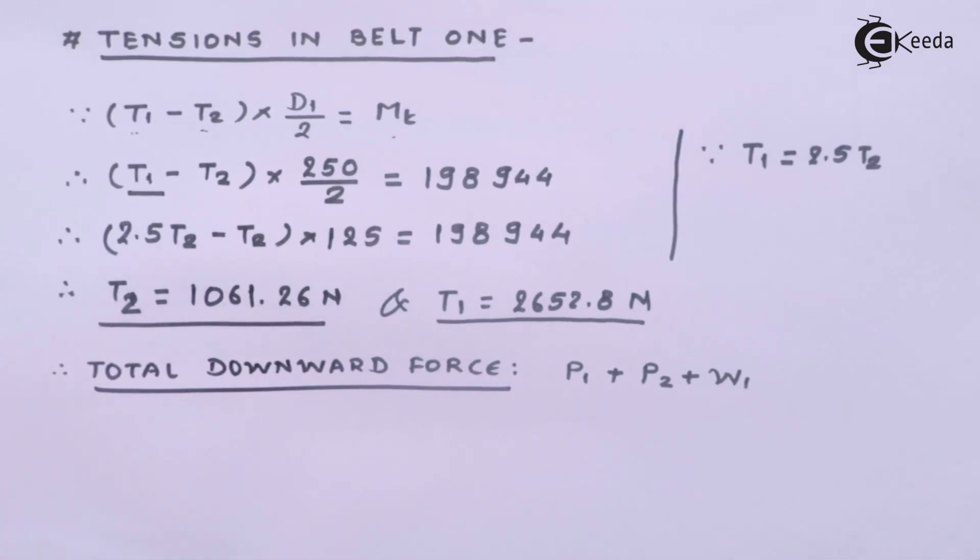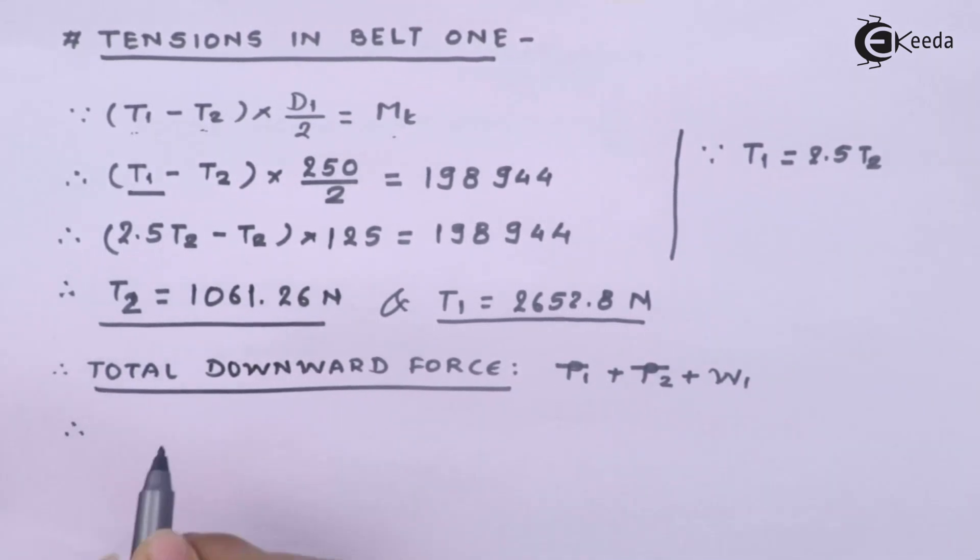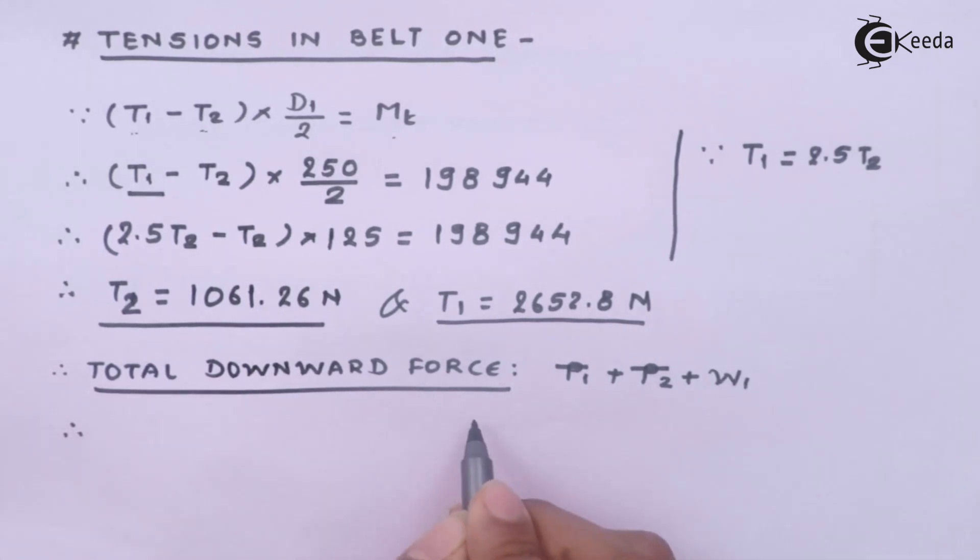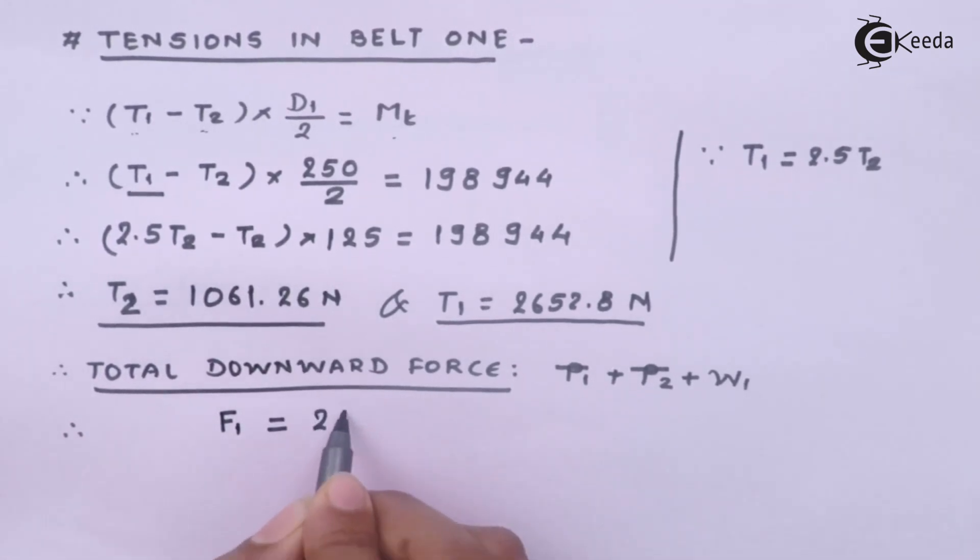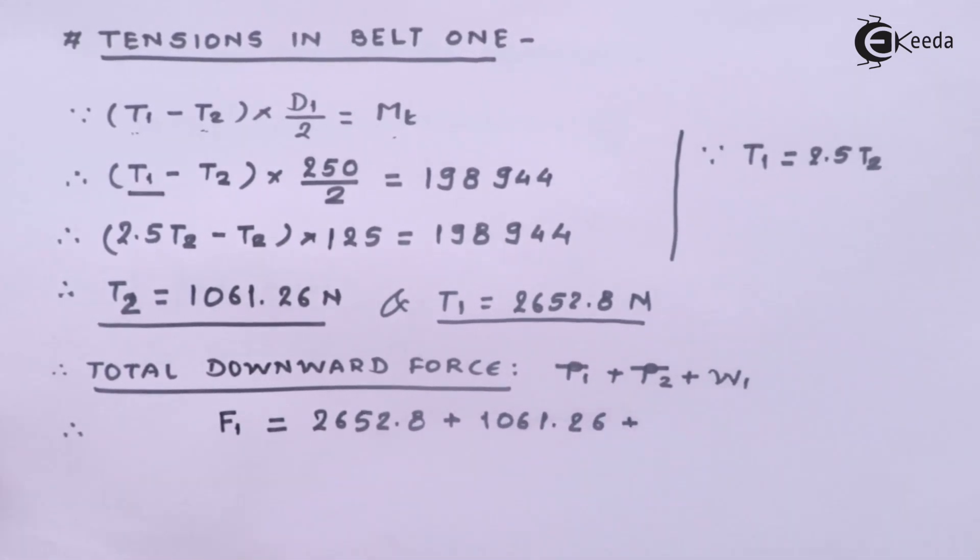And hence the total downward force on pulley number 1 becomes, it's basically tension 1 plus tension 2 plus the weight of the pulley. We have been given 10 kg and therefore it becomes force 1 because it's the pulley one we are considering.